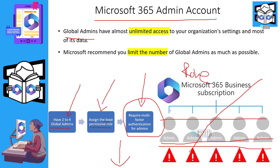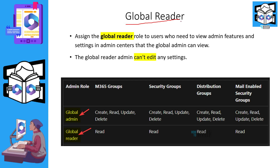Now let's check what global reader is and what accesses that role has. Global reader basically provides read-only access to all the admin features and settings in the admin center. The global reader cannot change anything but can view all settings, all admin features, and all configurations in your tenant.